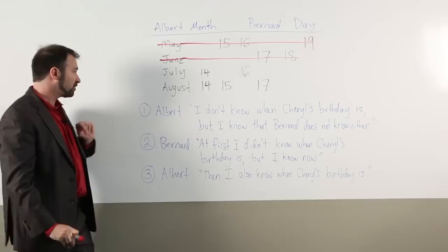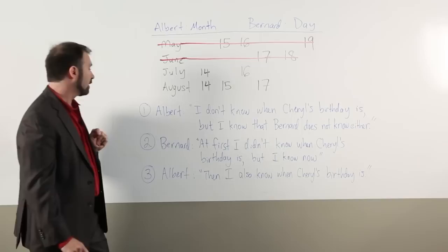Therefore, we're left with only these possibilities. Step two, Bernard says, at first, I didn't know when Cheryl's birthday is, but I know now. How could he truthfully make that statement?